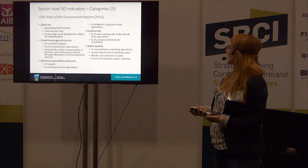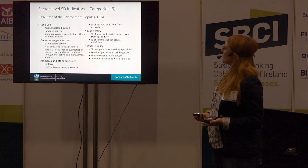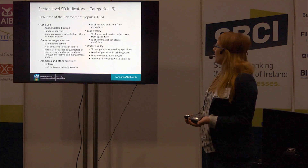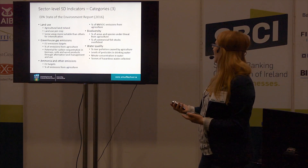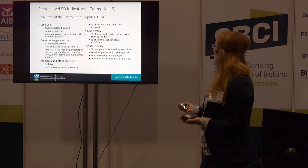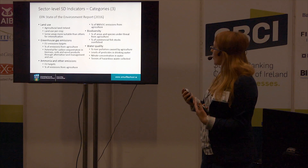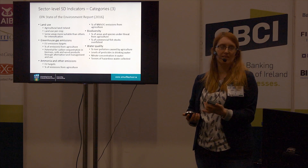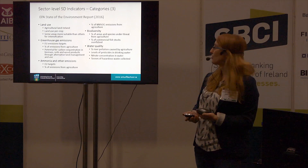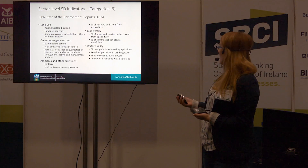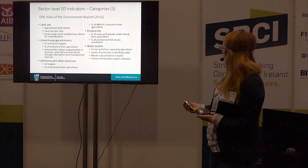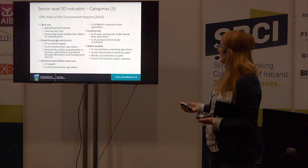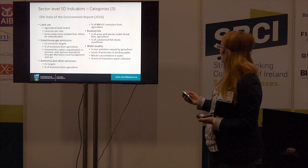The EPA State of the Environment report has a really good section on agriculture where they include lots of broad measures of sustainability that companies in the agriculture industry need to be thinking about — things like percentage of species under threat and river pollution.